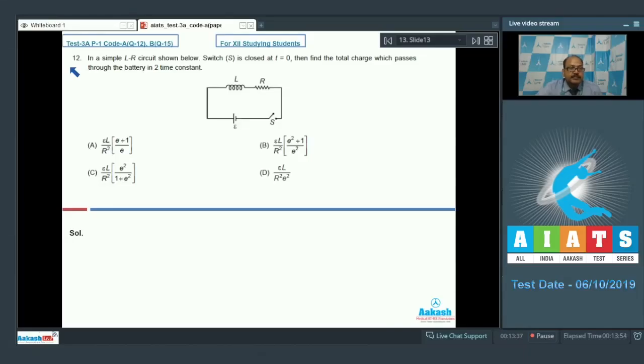Question 12 says, in a simple LR circuit shown below, switch S is closed at t equal to 0, then find the total charge which passes through the battery in two time constants.